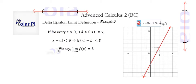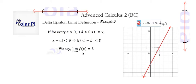A limit really means this: if for every epsilon greater than zero, there exists a delta greater than zero, such that for all x, the absolute value of x minus a being less than delta automatically implies that the absolute value of f of x minus L is less than epsilon, then you can say that the limit as x goes to a of f of x is equal to L.